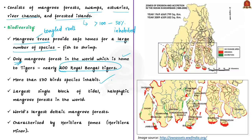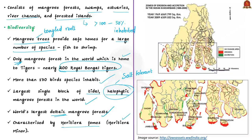Sundarbans is the largest single block of tidal halophytic — that is salt-tolerant — mangrove forests in the world. It is also the world's largest deltaic mangrove forest. The mangrove forests in the Sundarbans are characterized by Heritiera fomes, also known as Heritiera minor, an evergreen mangrove tree species valued for its timber. This species is found abundantly in the freshwater zones of Sundarbans, and this is one of the reasons why this swamp forest is known as Sundarbans — because locally the species is known as Sundari.